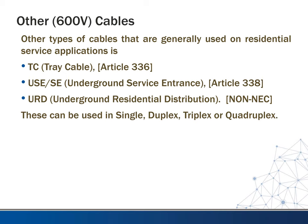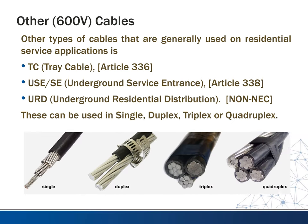The bottom two — USE, SE, and URD — usually come in the form of single, duplex, or triplex assemblies. If you hear people talking about triplex or duplex, this is what they mean. They are combined in an assembly on one spool so you can pull them all at one time. Usually you'll have the neutral or ground conductor, which will be bare, and then your phase conductors, which will have insulation on them.